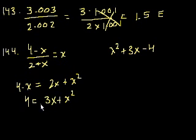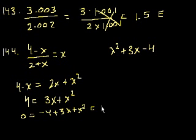Subtract 4 from both sides and you get 0 is equal to minus 4 plus 3x plus x squared, which is just rearranging that, which is the same thing as x squared plus 3x minus 4. So that is equal to 0, which is C.